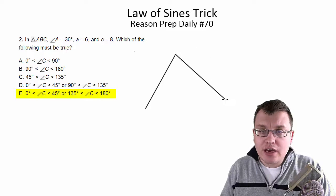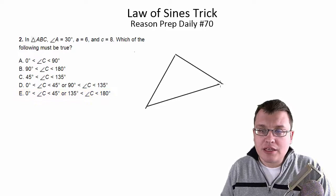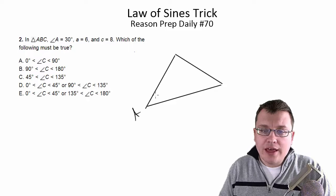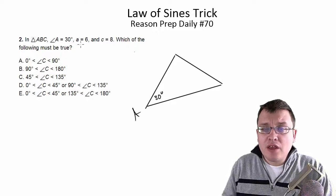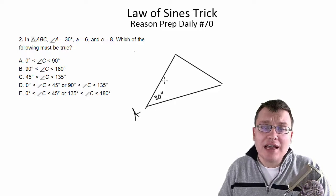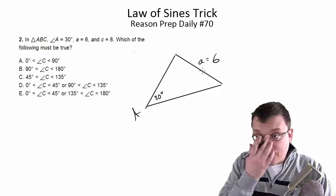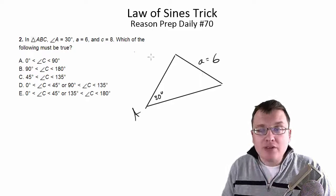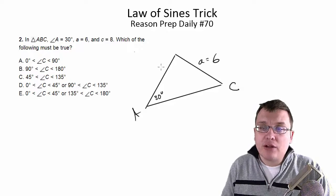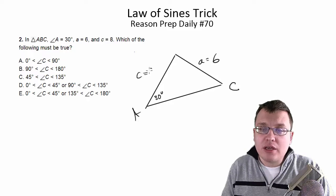Let's sketch out our triangle here. We'll draw something like this. We'll call this angle A. We know this is 30 degrees. Side a is 6, so side a is the side across from angle A, and that's going to be 6. And then we know c is 8, so we'll call this angle C, so this side here would be 8.